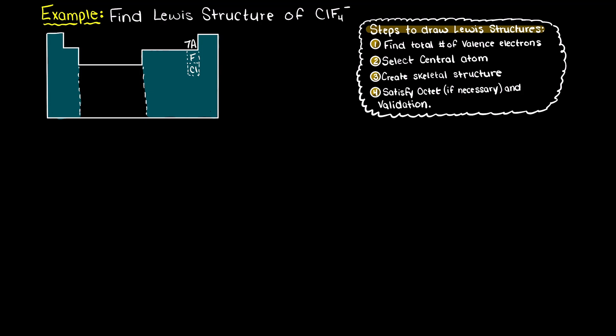First we need to find the total number of valence electrons that are present in our compound. Remember our trick to easily remember how many valence electrons an atom in groups 1A to 7A has. We look at the group number, the column that our atom resides in, and that will tell us the number of valence electrons that that atom has in a neutral state.